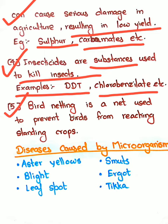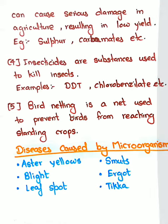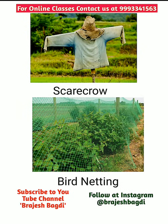The next method is bird netting. Bird netting is a net used to prevent birds from reaching standing crops. Here you can see the figure of bird netting — the whole plant is covered in a net so that birds cannot reach them and damage them. So bird netting is also an important crop protection method.